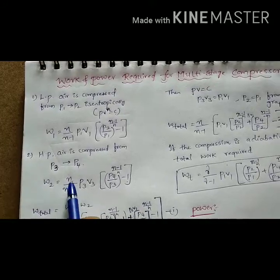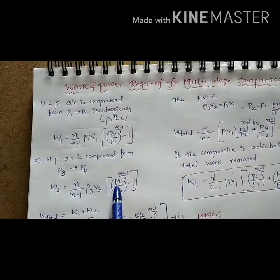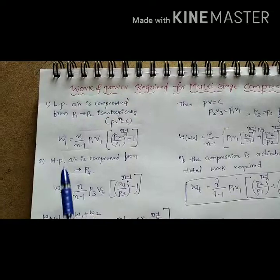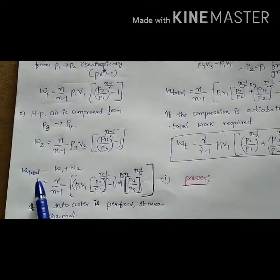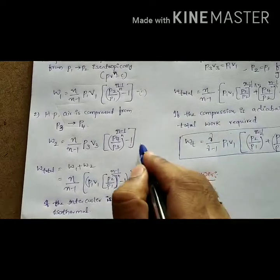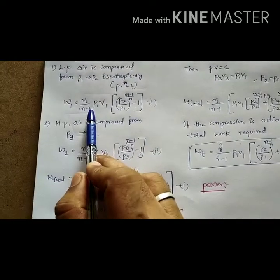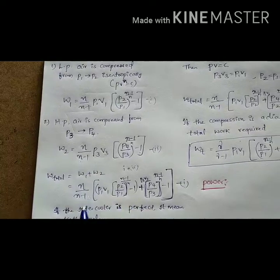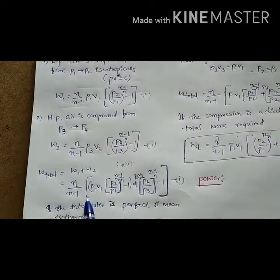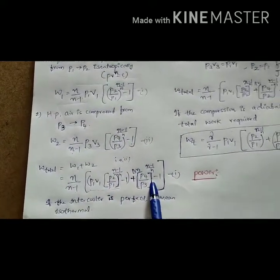Using the same formula n/(n−1), for the high pressure compressor we take the initial pressure P3 and initial volume V3, giving the term P4/P3 whole power (n−1)/n minus 1. Now I am combining the low pressure work done W1 and the high pressure work done W2. Adding equation one and equation two, n/(n−1) is common, so I take it outside: P1V1 × [(P2/P1)^((n−1)/n) − 1] plus P3V3 × [(P4/P3)^((n−1)/n) − 1].